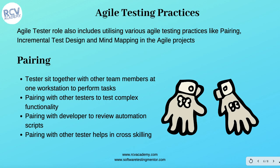There are also specific practices you need to follow as an agile tester. The agile tester role includes utilizing various agile practices such as pair programming, incremental test design, mind mapping, and others. Pairing comes from Extreme Programming and can be used in any agile development activity including Scrum. Working with peer testers, developers, and business stakeholders on a regular basis — communicating and collaborating with them — resolves a lot of quality issues upfront before they become defects in actual testing. Testers sit together with other team members at one workstation and perform tasks together.